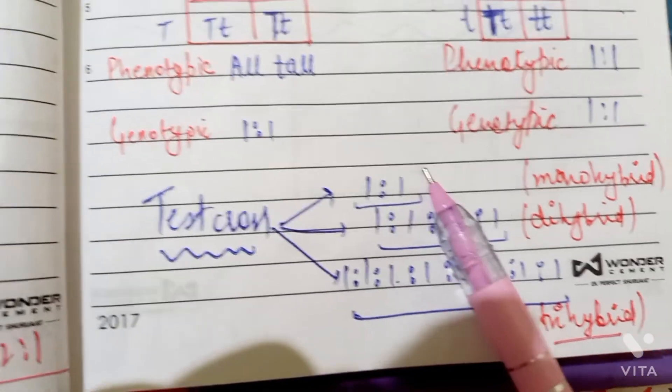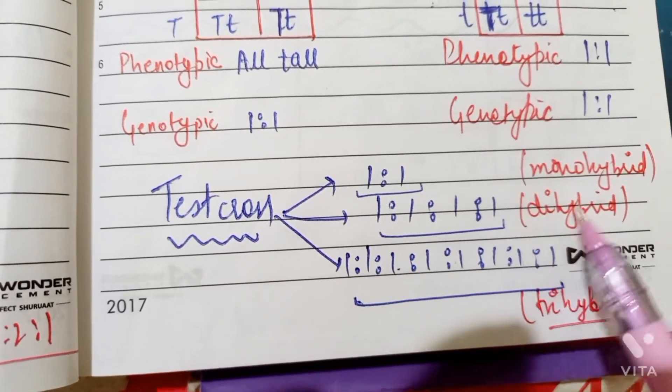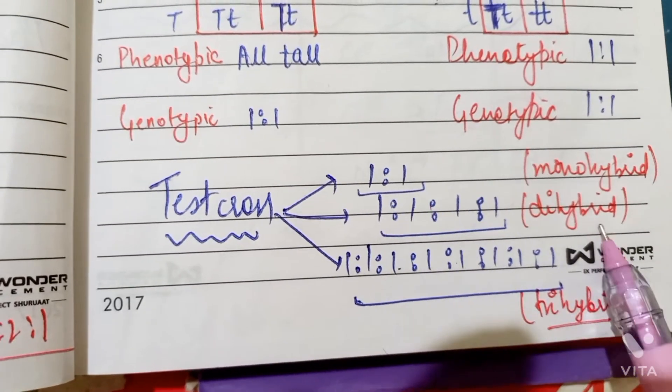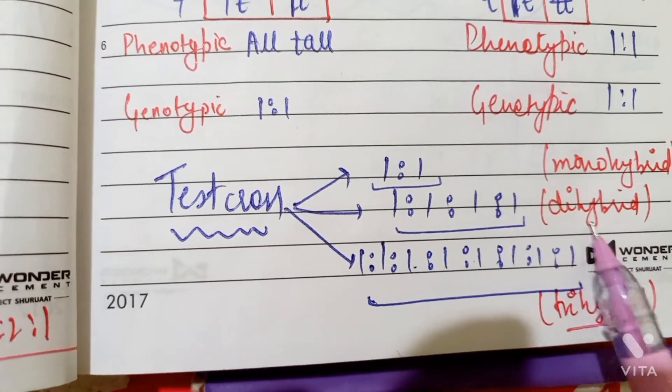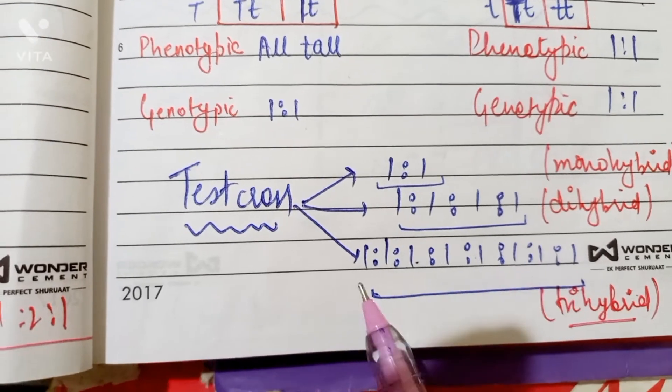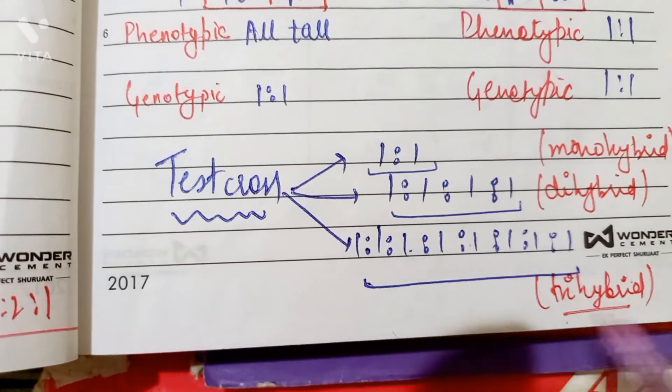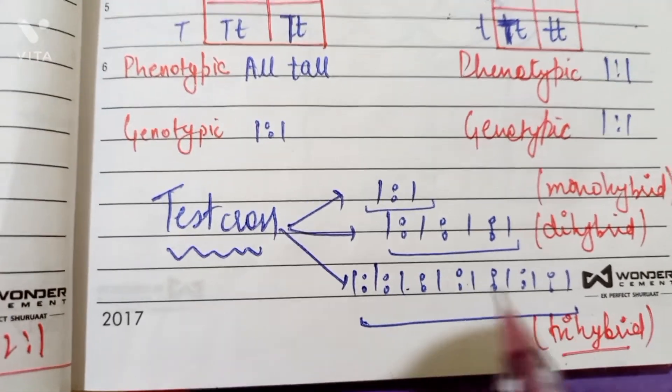Here is the testcross. The ratios are 1 is to 1 in the monohybrid. In the dihybrid, that means 2 to the power 2, that means 4. So here is 1 is to 1, 4, and here is trihybrid, that means 2 to the power 3 and 8.